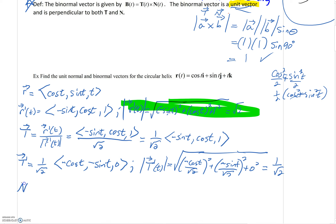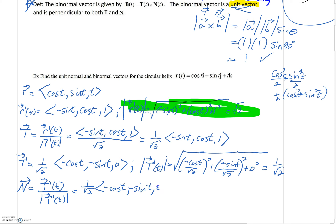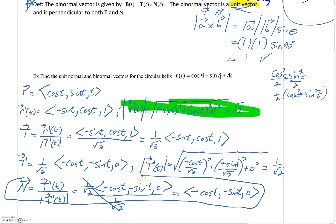The normal vector N is T prime divided by its length. We have 1 over root 2 times the vector negative cosine t, negative sine t, 0, and the length is 1 over root 2. Dividing, the unit normal vector N is simply negative cosine t, negative sine t, 0.